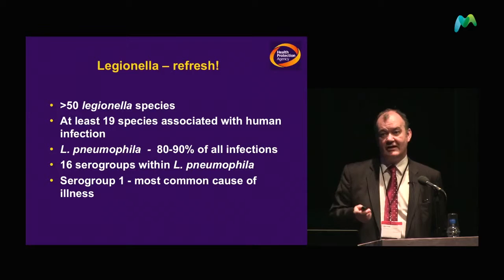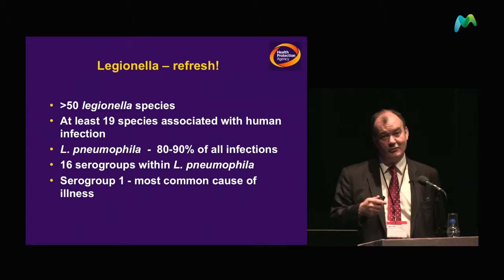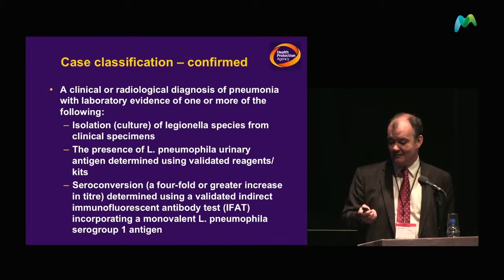The fact that the urinary antigen test we use is actually specific for Legionella pneumophila serogroup 1 may also be a factor in why so many of the cases are identified as Legionella serogroup 1.